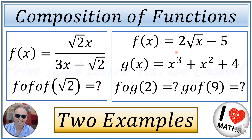Hello everyone, welcome to the Prime Math Lovers YouTube channel. In this video we are going to solve a couple of questions from the composition of functions topic. The first question says f of x is equal to the square root of 2 times x divided by 3x minus the square root of 2, and we are asked to find f∘f∘f of √2. The second question is f of x equals 2√(x−5) and g of x equals x³ + x² + 4, and we are asked to calculate f∘g(2) and g∘f(9).